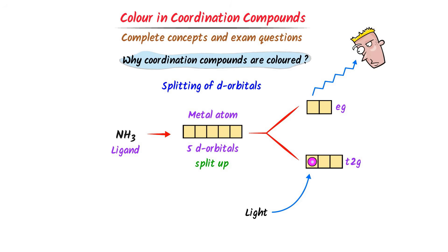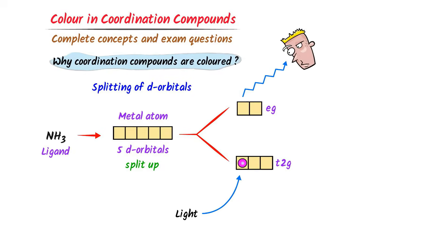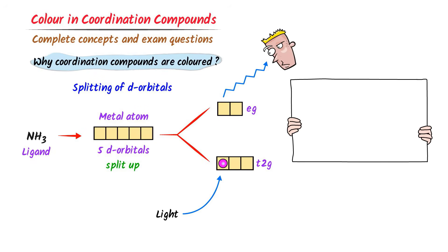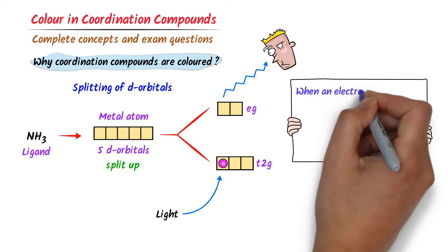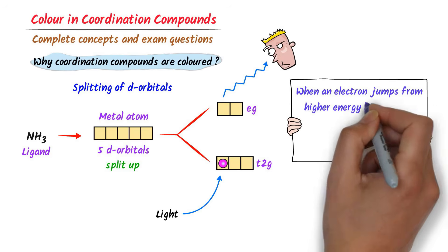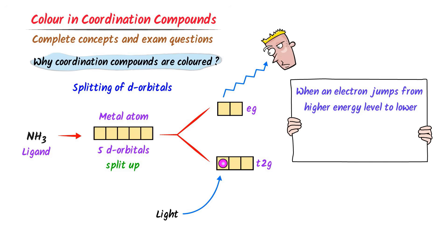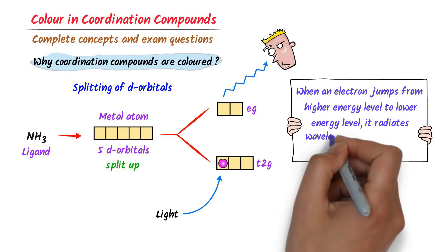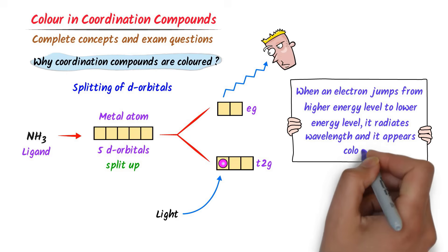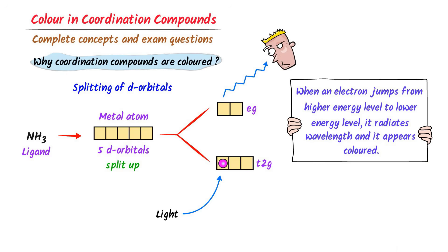Thus, we learn that it is because when an electron jumps from a higher energy level to a lower energy level, it radiates a wavelength. We see the radiated wavelength and the coordination compounds are therefore colored.